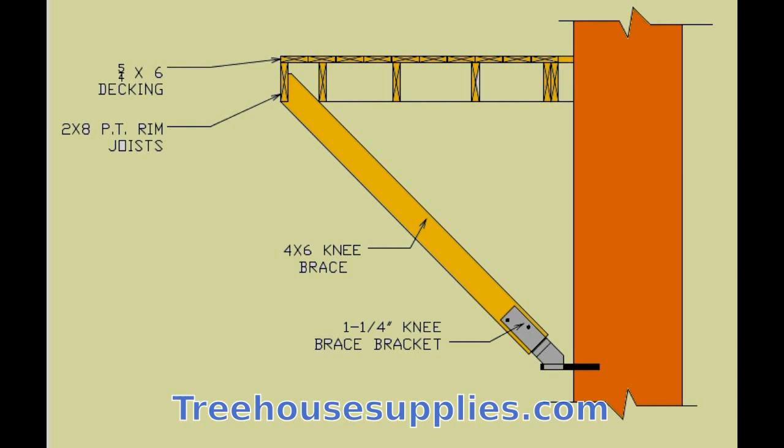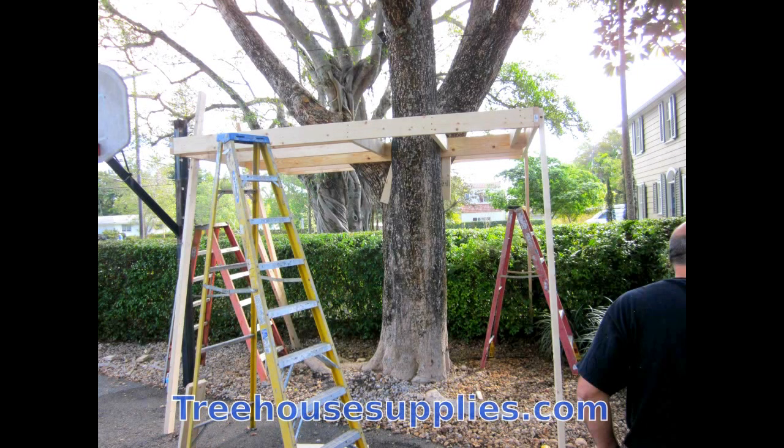Let's get started. Before we build our knee brace, the platform should be in place and temporarily supported from the ground. Use a 2-foot or longer level right above where the knee brace will be installed to see if the joists are perfectly horizontal.